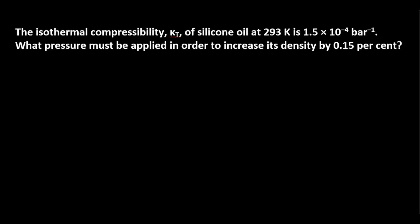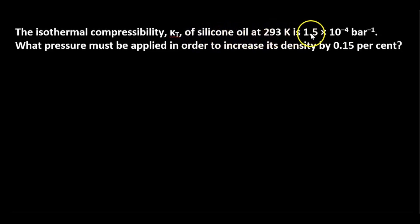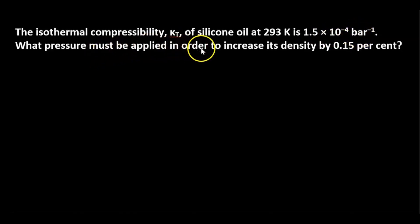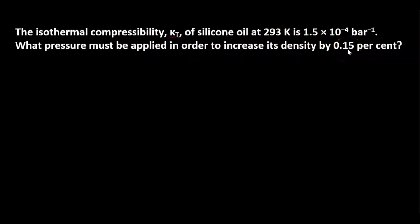Hey, what's up everyone? Terry here, and we have an isothermal compressibility problem to do. This is the compressibility of silicone oil at 293 Kelvin — it's 1.5 times 10 to the negative 4 per bar. The question is: what pressure must be applied in order to increase its density by 0.15%?